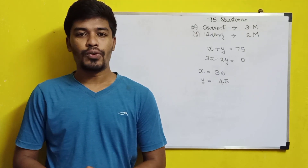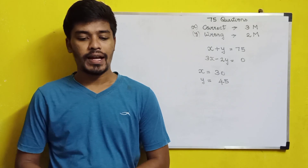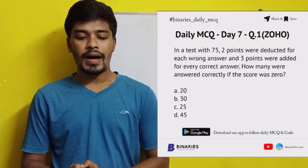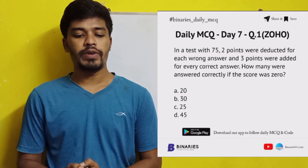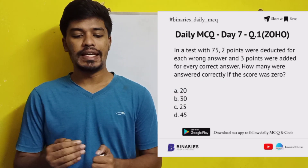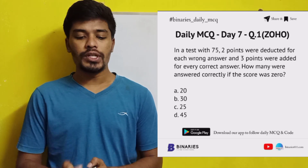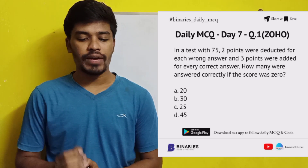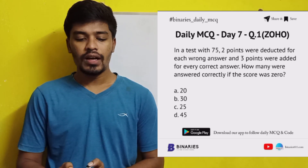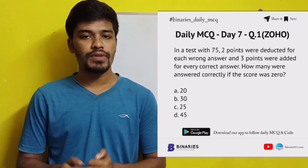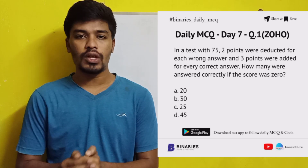The first question: In a test with 75 questions, 2 points are deducted for each wrong answer and 3 points are added for every correct answer. How many questions were answered correctly if the total score was 0?